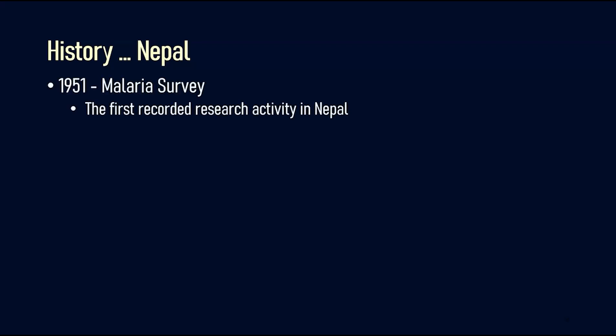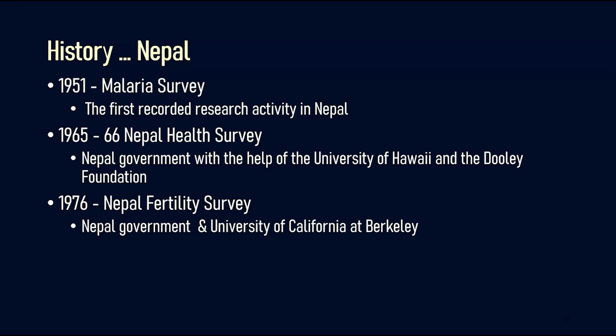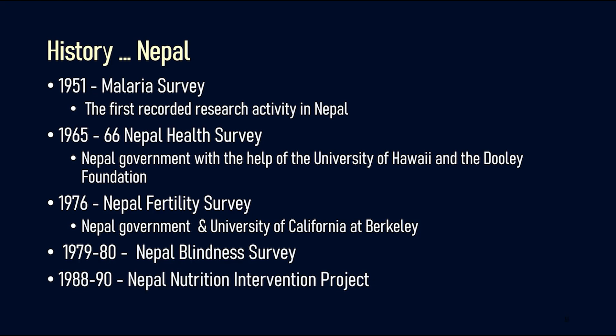Turning to the history of medical research in Nepal: the first recorded research activity was performed in 1951, when a malaria survey was conducted in Kathmandu Valley. Then in 1965 to 1966, the Nepal Health Survey was performed by the Nepal government with the help of the University of Hawaii and the Tuli Foundation. In 1976, the Nepal Fertility Survey was performed with the help of the University of California at Berkeley. In 1979 to 1980, the Nepal Blindness Survey found cataract to be the most common cause of blindness in Nepal. In 1988 to 1990, the Nepal Nutrition Intervention Project was carried out.